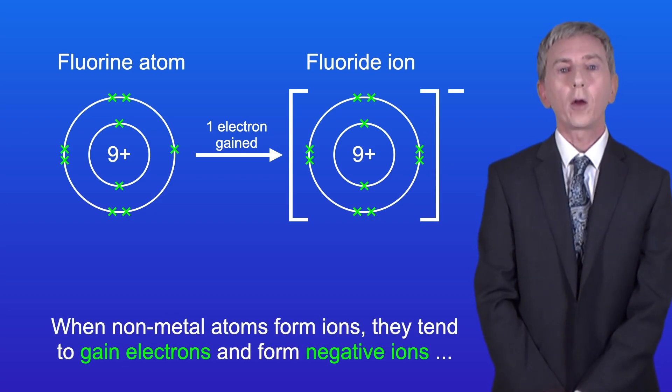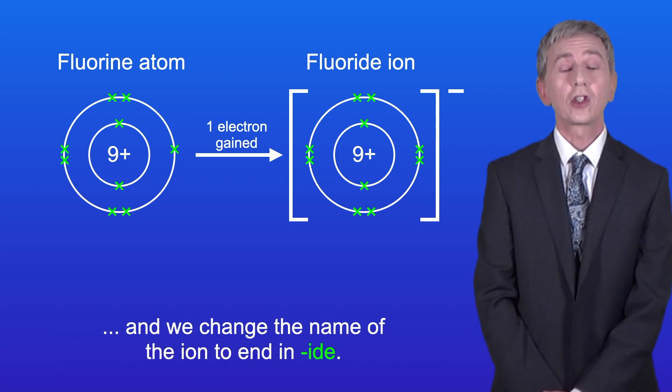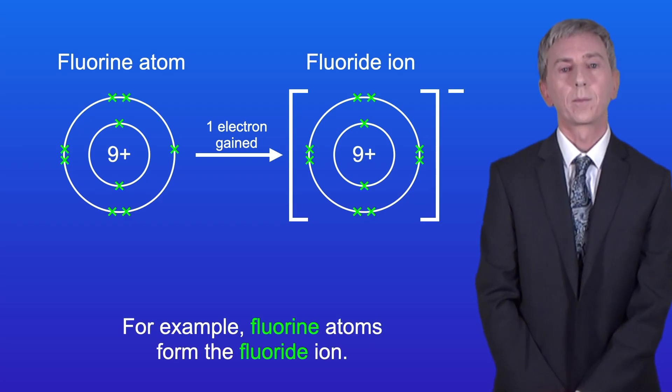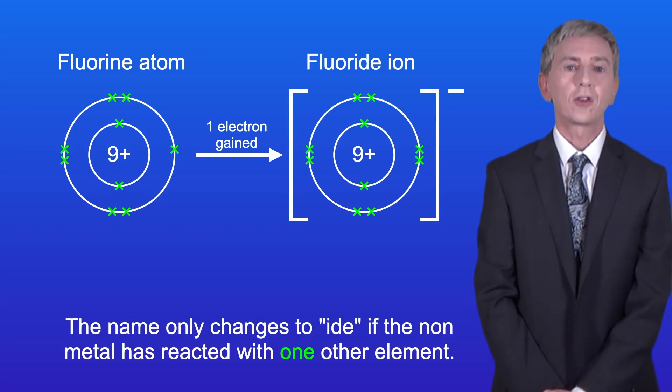Now when non-metal atoms form ions they tend to gain electrons and form negative ions, and we change the name of the ion to end in -ide. For example, fluorine atoms form the fluoride ion. Now the name only changes to -ide if the non-metal has reacted with one other element.